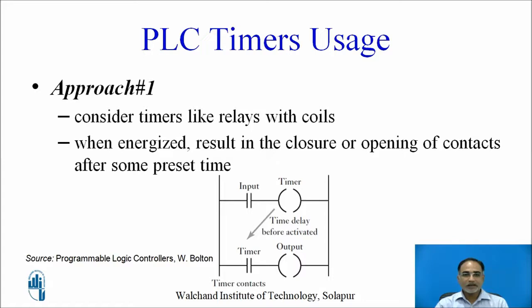There are two approaches to using timers in ladder diagram programming. In the first approach, you consider timers like relays with coils. In the first rung, the timer is shown as a relay coil symbol. When the coil gets energized, it results in the closure or opening of contacts after some preset time. In the second rung, a dependent timer contact is shown, which depends on the status of the timer. When that contact gets activated, your output gets energized.